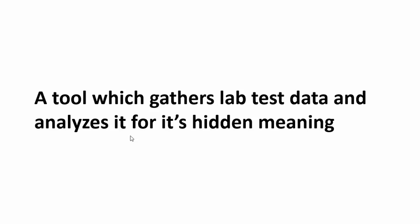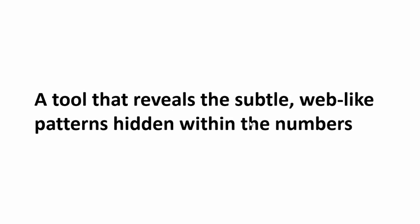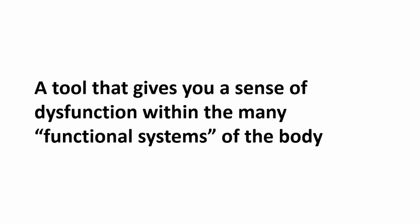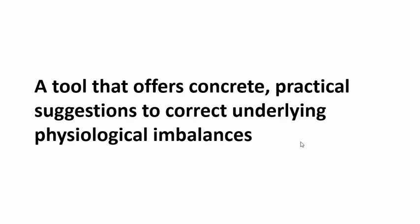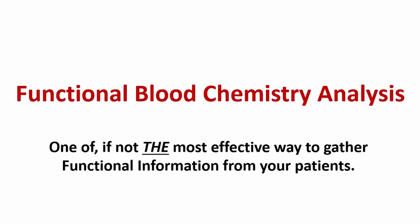So here's what's missing: a tool which gathers lab test data and analyzes it for its hidden meaning — a tool that reveals subtle, web-like patterns hidden within the numbers themselves; a tool that gives you a sense of dysfunction within the many functional systems of the body; and a tool that offers concrete, practical suggestions to correct underlying physiological imbalances. A tool like that does exist and it's called functional blood chemistry analysis — one of, if not the most effective way to gather functional information from your patients.